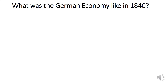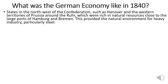So what was the German economy like in 1840? By 1840, we are starting to see the beginning of some industry in Germany. Agriculture is still the main source of the economy, but industry is beginning to grow. However, this growth isn't geographically spread across Germany — some areas benefited far more than others. States in the northwest of the Confederation, such as Hanover and the western territories of Prussia around the Ruhr, were rich in natural resources and close to the large ports of Hamburg and Bremen. This provided the natural environment for heavy industry, particularly steel.